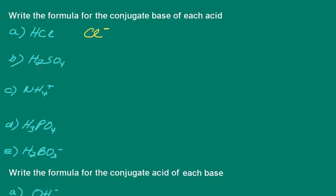Sulfuric acid — when it donates one proton, we can write its conjugate base as HSO₄⁻. Don't forget the negative charge; when one proton is donated, the charge on the species decreases by one. Ammonium ion, when it loses a proton, becomes ammonia — again the charge decreases by one. Phosphoric acid loses one proton to give H₂PO₄⁻, and we include a negative charge because the conjugate base has lost a proton.